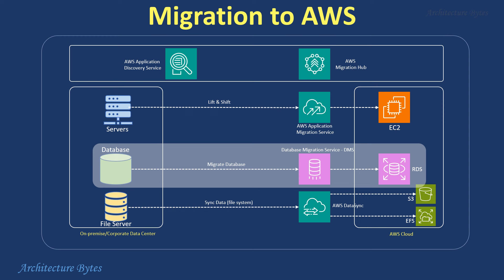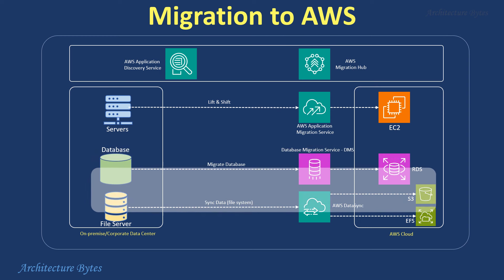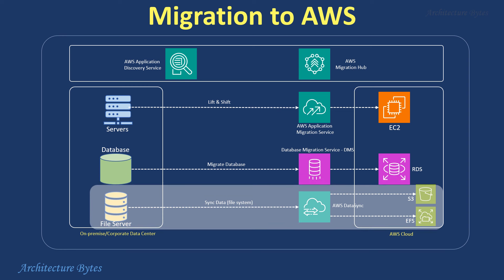For database migration, DMS or Database Migration Service is useful. And for file server copy and sync of data to AWS storage like S3 or EFS, AWS DataSync can be used.